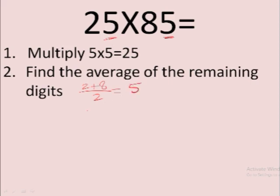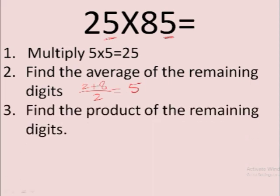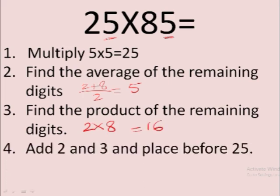Then the product of the remaining digits—the same numbers—now we multiply these numbers and that's what we get. Then add these two. So if we add 16 and 5, or 21, place them before 25. That's what we did: 2125. That's the product of these two numbers.